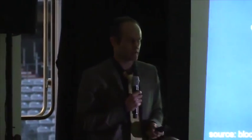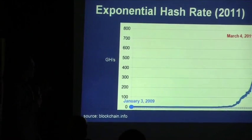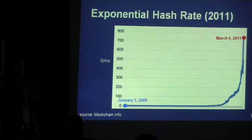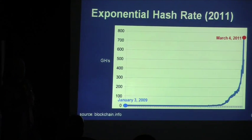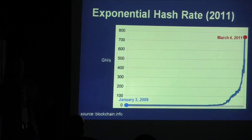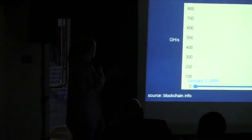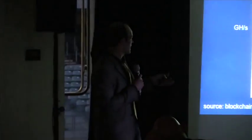I want to start with this. This is a plot of the hash rate of the network up until around the time when I first discovered Bitcoin in 2011. The hash rate is how many hashes per second — we're talking 700 gigahashes per second there at the very end. We start here at January 3rd, 2009 — that's the Genesis block.